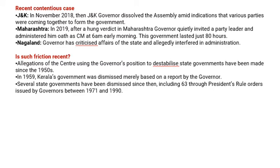For example, in Jammu & Kashmir in November 2019, the governor dissolved the assembly indicating that various parties were coming together to form a government. Even in 2019 in Maharashtra, after a hung verdict, the governor invited a party leader and made him Chief Minister. In Nagaland also, the governor criticized state affairs and interfered in administration.